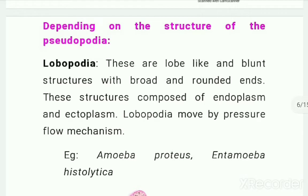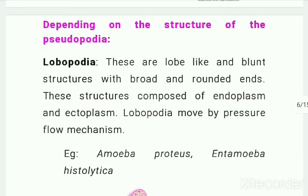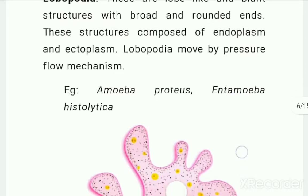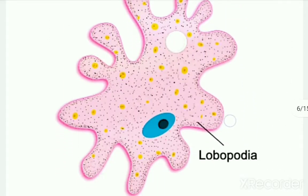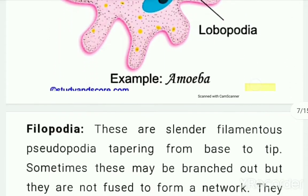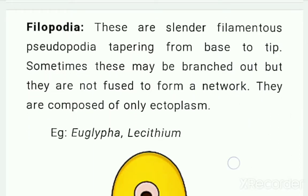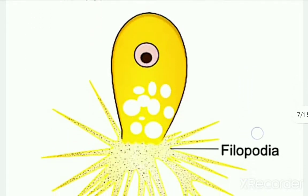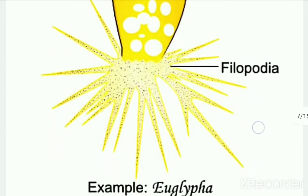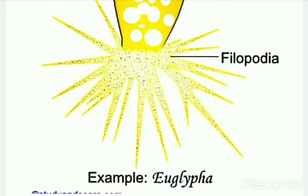Second classification is on the basis of structure. First is lobopodia, which we just discussed in case of amoeba, meaning the pseudopodium is blunt and consists of both ecto and endoplasm. Next is filopodia, which are very fine and filamentous pseudopodia. The pseudopodium in this case consists only of ectoplasm; it does not have endoplasm. The pseudopodia may be branched but they do not show network formation.